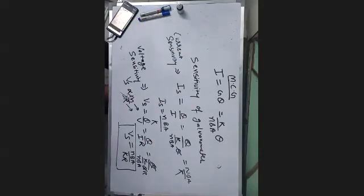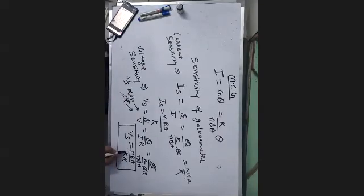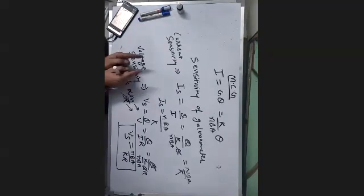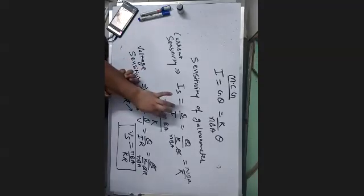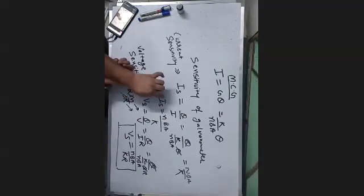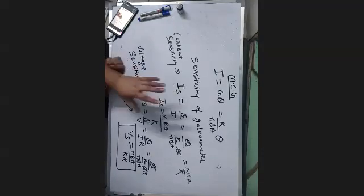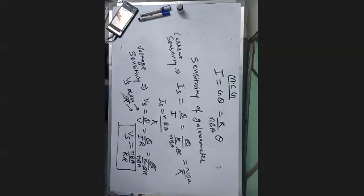The number of turns and the resistance increase together, so they cancel each other in the voltage sensitivity formula. Therefore, voltage sensitivity does not change. But the current sensitivity of the galvanometer does change. The answer is: if we increase the number of turns, current sensitivity increases, but voltage sensitivity of the galvanometer will not change, because with the increase in number of turns, the resistance of the galvanometer coil also increases proportionally.